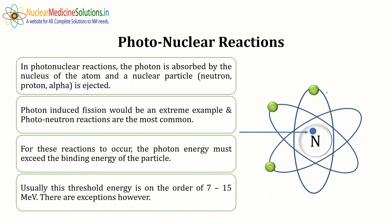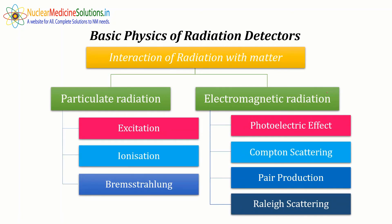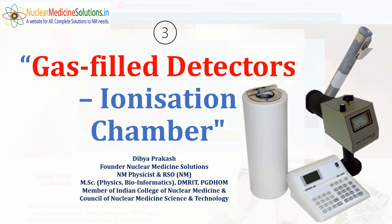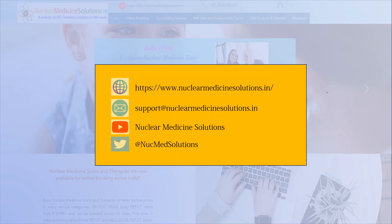To summarize: there are two kinds of radiation — particulate and electromagnetic. Particulate radiation interacts with matter through excitation, ionization, and Bremsstrahlung. Electromagnetic radiation interacts through the photoelectric effect, Compton scattering, pair production, Rayleigh scattering, and photonuclear reactions. In the next presentation we will discuss gas-filled detectors, including ionization chamber-based detectors such as dose calibrators, GM counters, and pocket dosimeters. Thank you very much for your patient hearing; please write to us at support@nuclearmachinesolutions.in for any feedback or query.